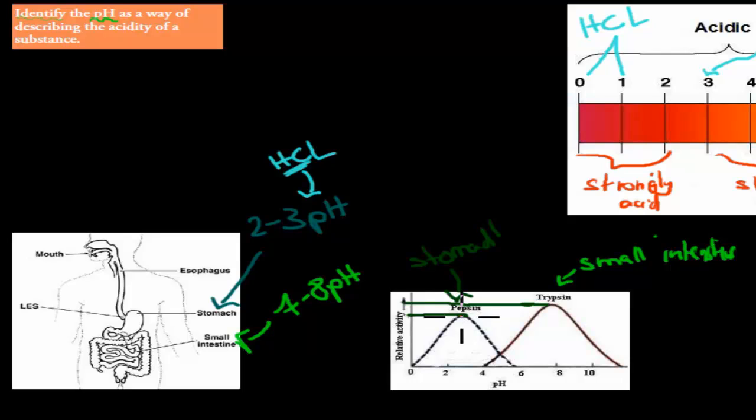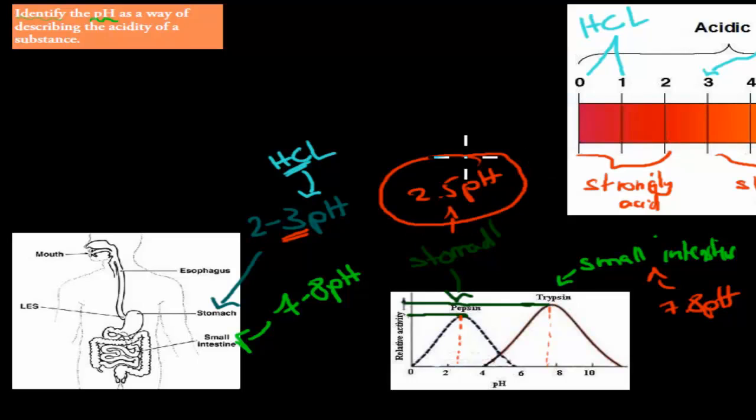If we trace that point down to what kind of pH that is. Pepsin, the enzyme in the stomach, works best at about 2.4, 2.5 pH. The small intestine enzyme trypsin, which is in our small intestine, works best at around about a pH of 7.8. That makes sense because the pH in our stomach is 2 to 3, and the actual stomach enzyme pepsin is adapted to that same pH. So it works best at the same pH that our stomach usually has.